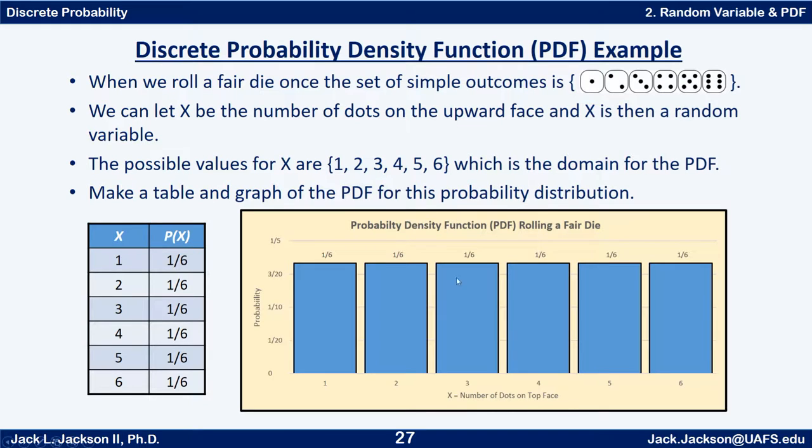The widths of the bars need to be the same. In this case, the area of the bar is proportional to the probability. If the base is 1, then the area and the probability are the same, but the base doesn't have to be 1. It needs to be the same width across the base for each one of these.